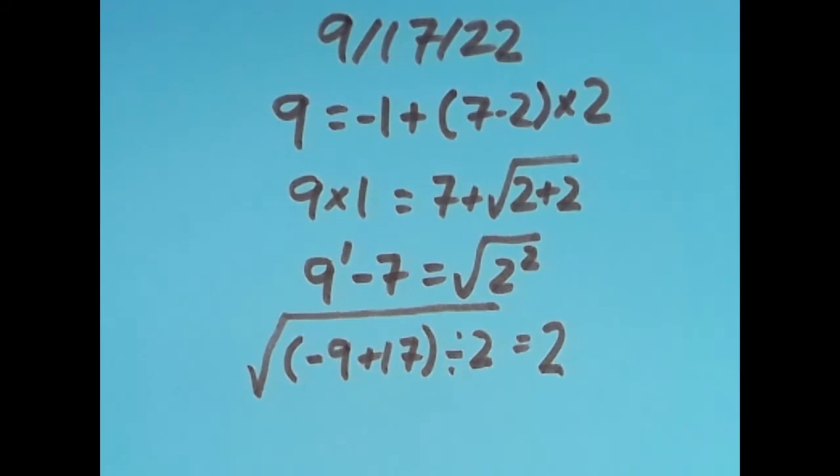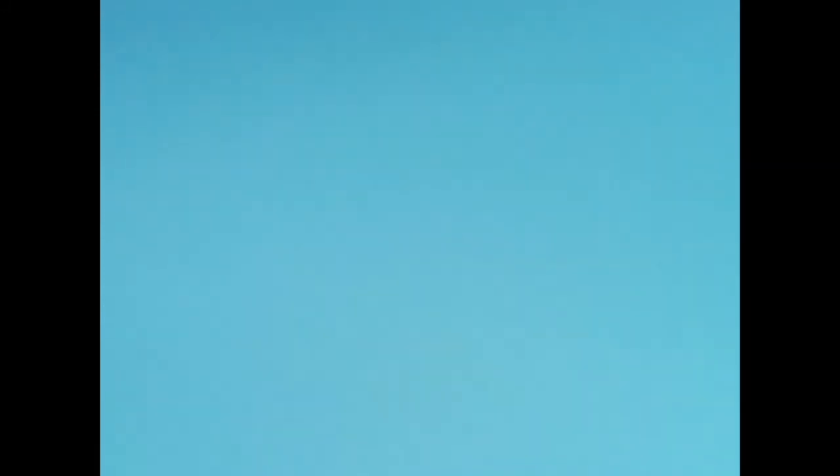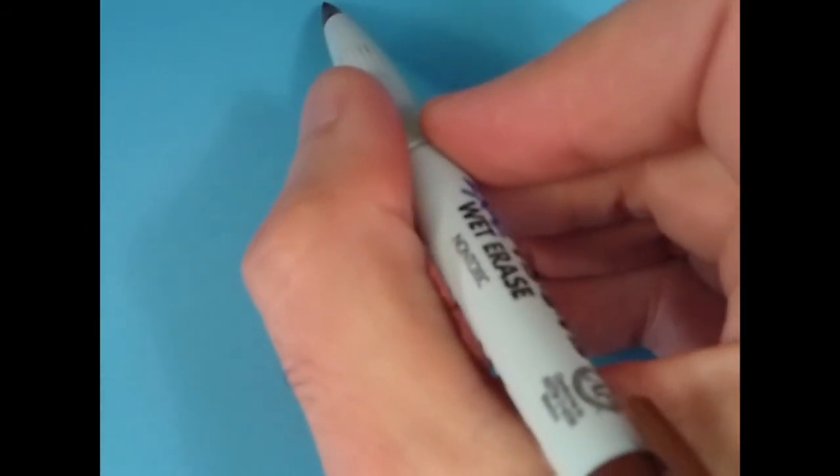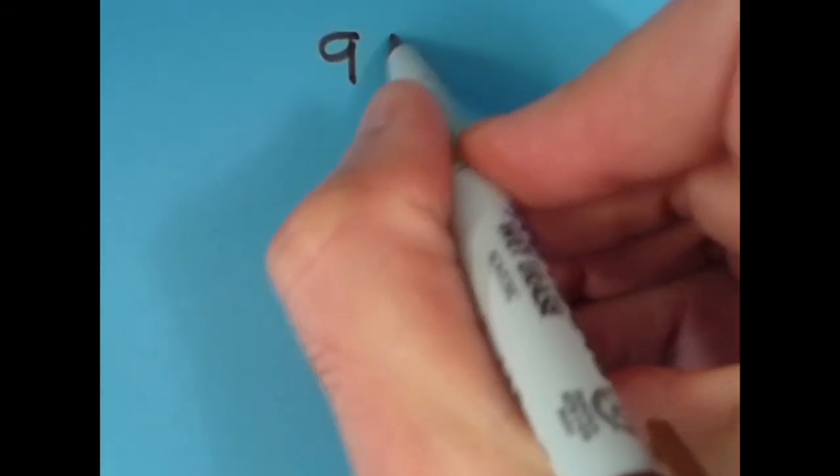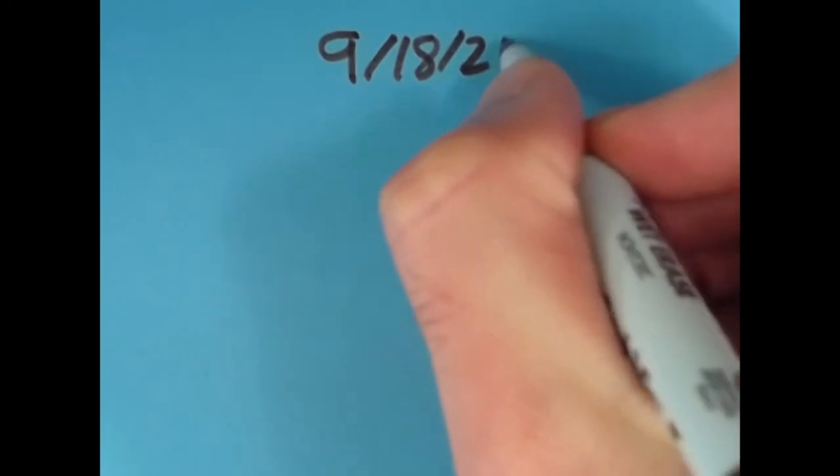Now tomorrow is going to be September 18th, so we can write the date as 9-18-22. So go ahead and see if you can come up with an equation for the digits in this date. I'll do the same thing and share my results in a new video tomorrow, and anything that you find for this date you can put in that video's comment section. Thank you so much for watching, really appreciate it, and have a great day.